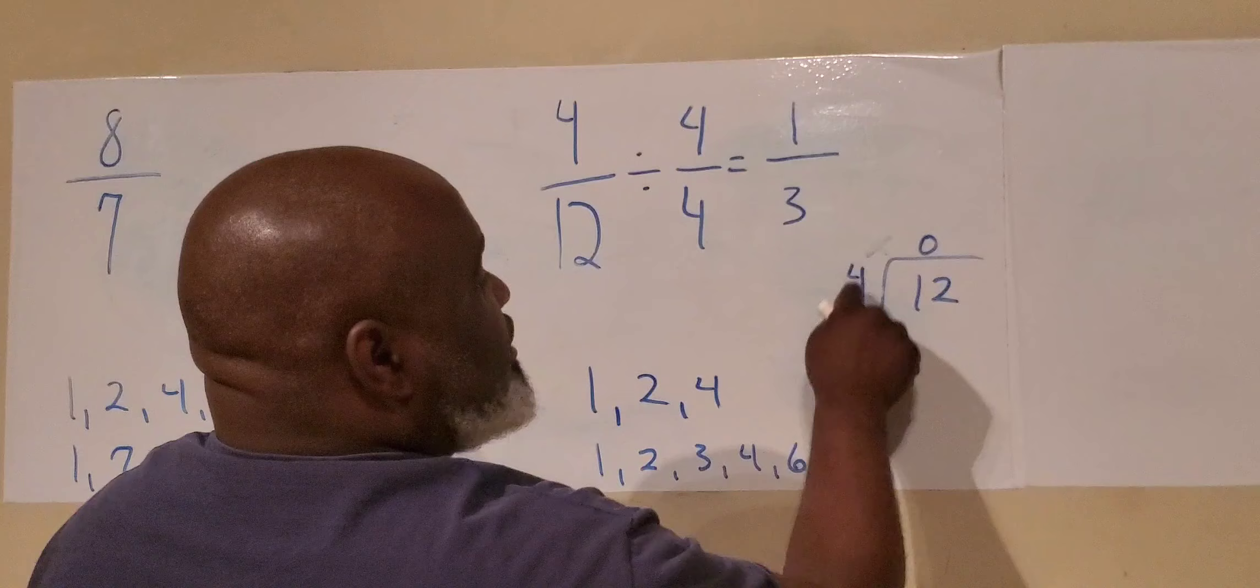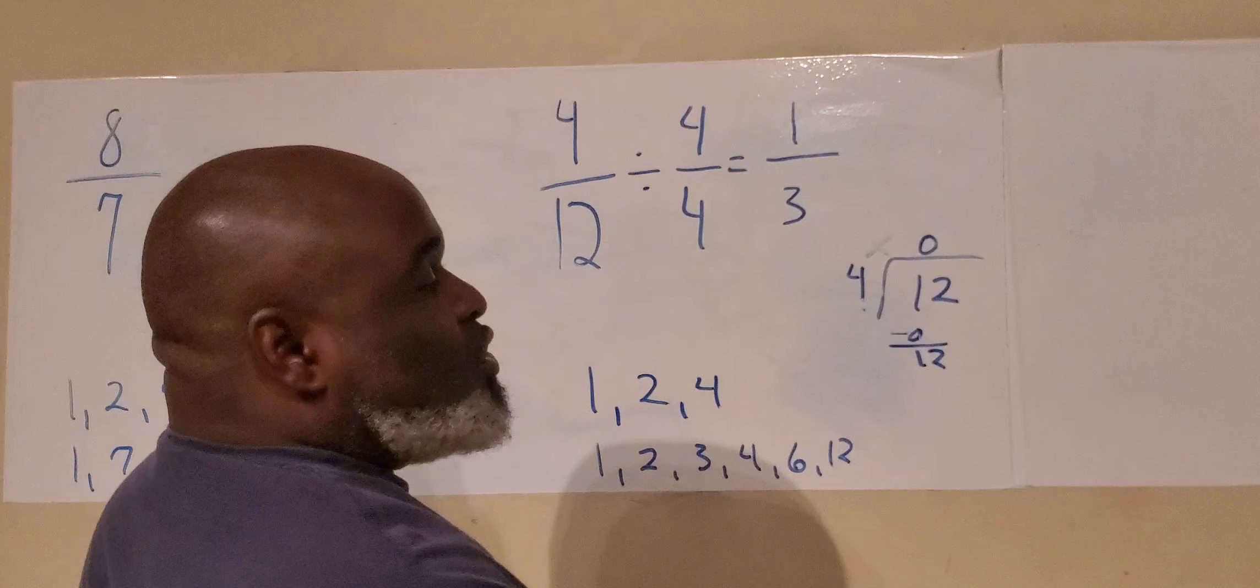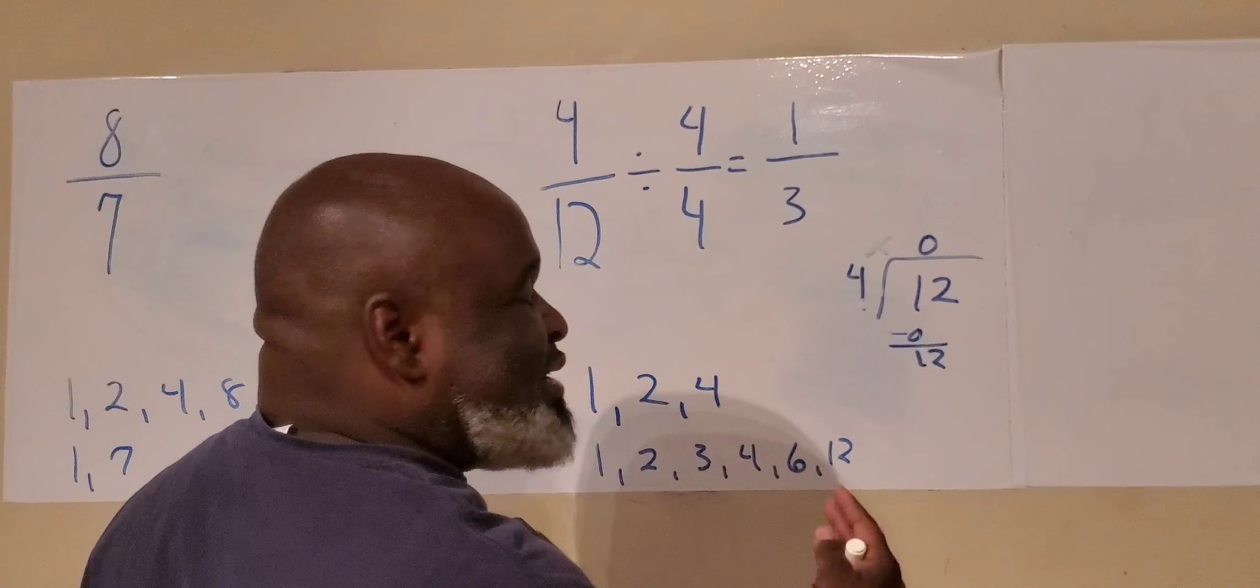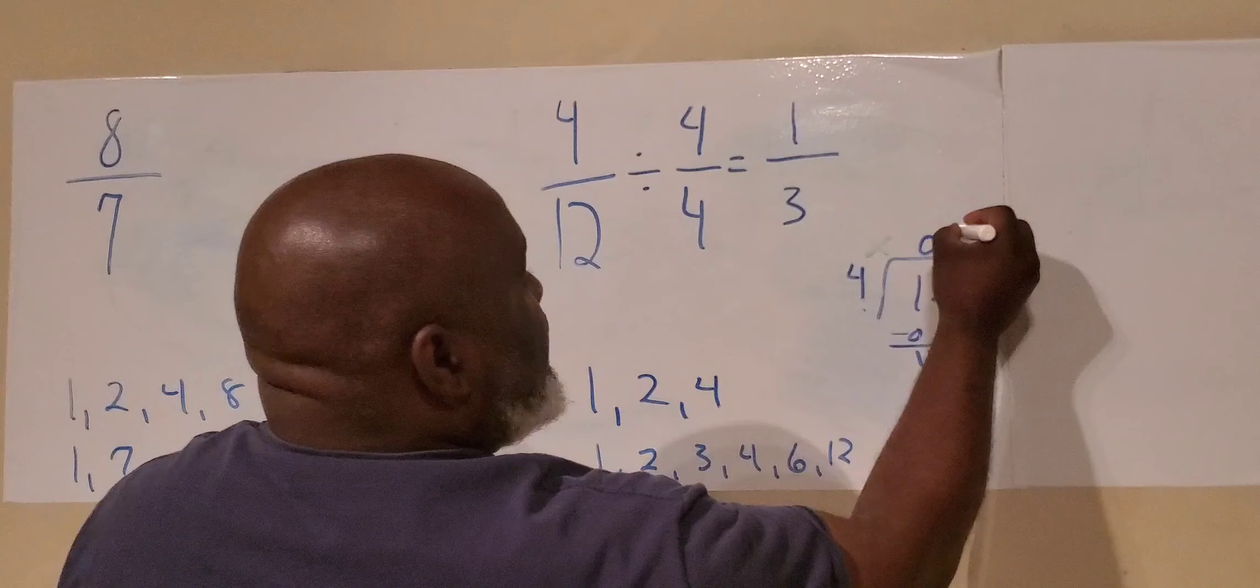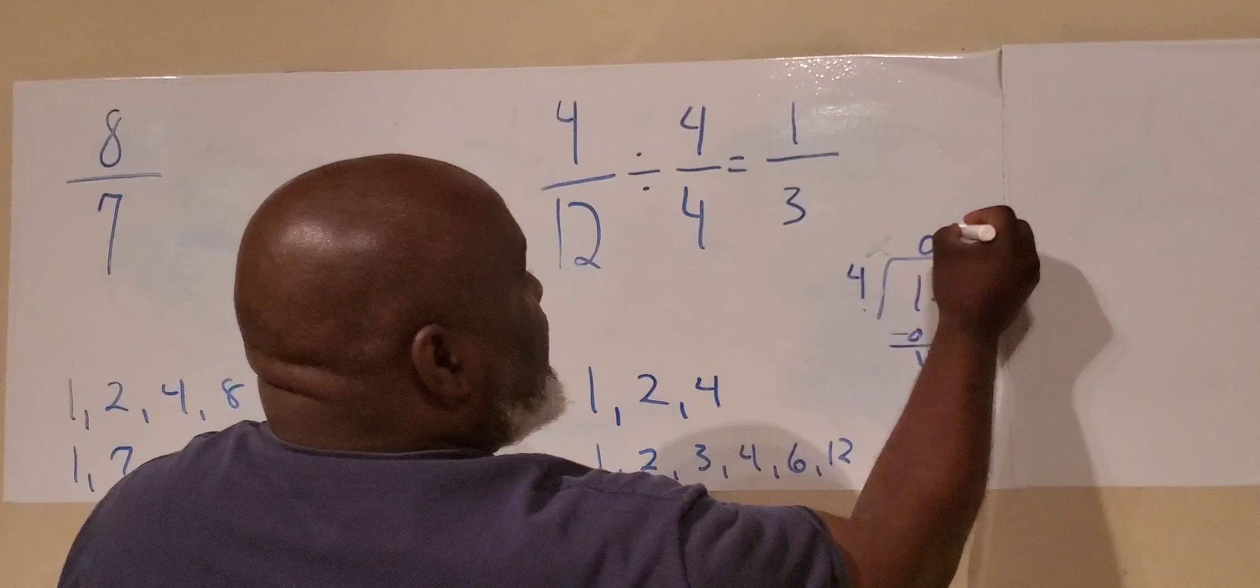Zero times four equals zero. Now we still got 12. So we know timetable is four times one is four. Four times two is eight. Four times three is 12. So we have 12, three here, because three times four equals 12. And here we are. Simplification.